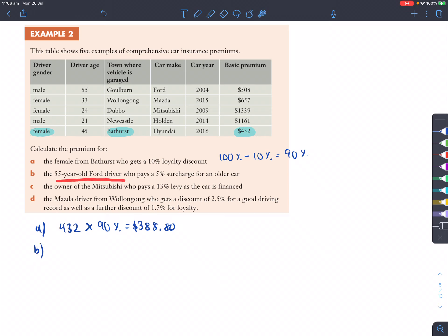Question B, a 55-year-old Ford driver who pays a 5% surcharge for an older car. So we're basically looking at the Ford driver, which is this person, so he's a male driver, and he pays $508 normally, but because he's paying that 5% surcharge, well, you've got to add that on top of the original 100%, and he's paying 105%, basically, then. So we're going to get 508 times 105% due to that surcharge, and that will give us a total of $533.40. So it's just about $25 extra.